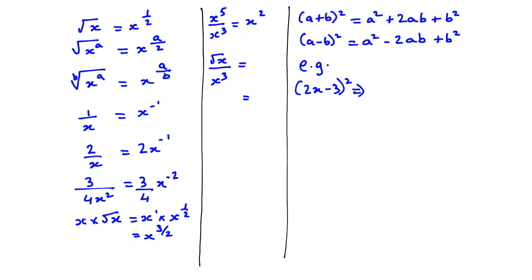Here you have square root x over x to the power of 3. First we write square root x as x to the power of half, and we have x to the power of 3. Since it is division, we write half minus 3, which gives us x to the power of negative 5 over 2.